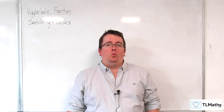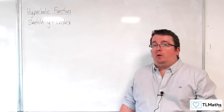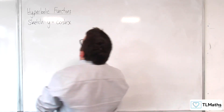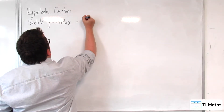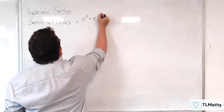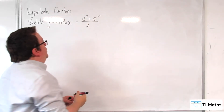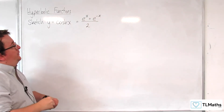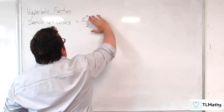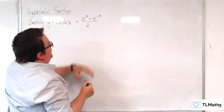In this video we're going to be sketching y equals cosh x, in a very similar way to how we did sinh x in the previous video. So y equals cosh x is e to the x plus e to the minus x, over 2. We can look at it as the sum of y equals e to the x over 2, and y equals e to the minus x over 2.